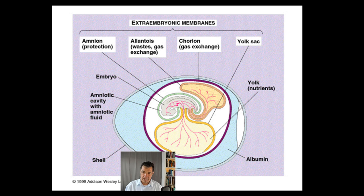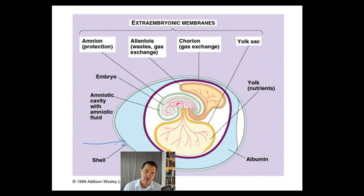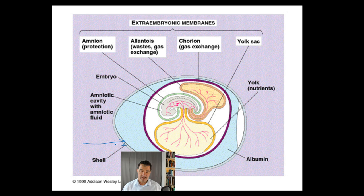This is my typical amniotic egg. The shell is hard — though I should clarify: depending on the reptile, the egg is more like leathery. It's harder by far than an amphibian egg, but not quite like a chicken egg. It's somewhere in between, but very water resistant. We have this shell, and then we have the amnion, the allantois, the chorion, and the yolk sac.